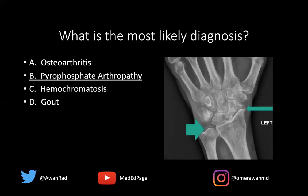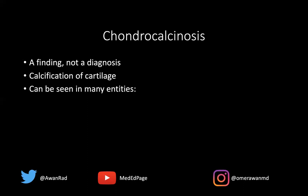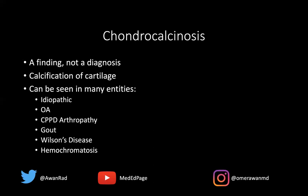I want to draw your attention to the term chondrocalcinosis. This is not a diagnosis — it's a radiographic finding. It means there is calcification within cartilage, most commonly fibrocartilaginous structures like the meniscus in the knee or the triangular fibrocartilaginous complex in the wrist, as seen in this case. It can be seen in many things: it can be idiopathic, or seen in osteoarthritis, CPPD or pyrophosphate arthropathy, gout, Wilson's disease, and hemochromatosis. So when we see it, it's just a finding — we need to determine the underlying diagnosis by looking at the other findings in the case.